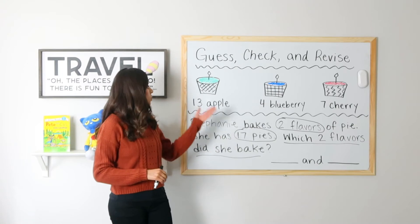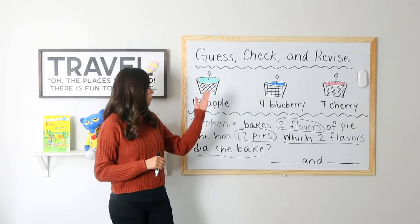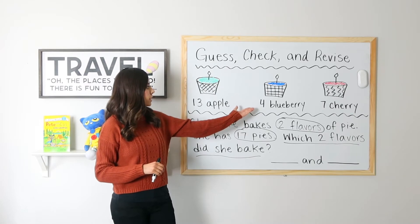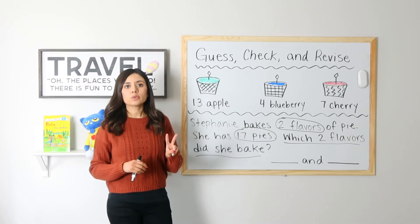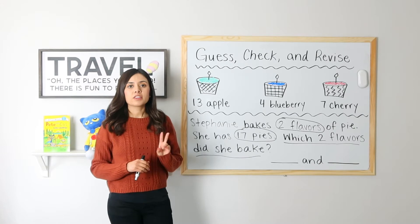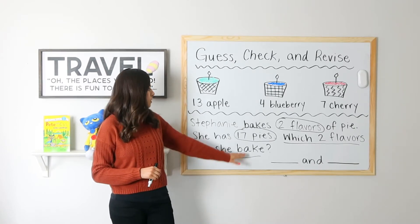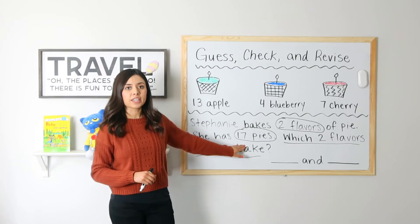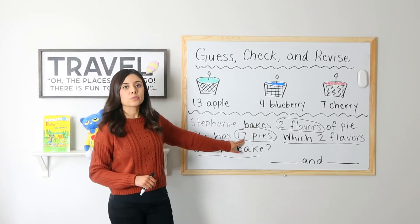What we want to do is look at our three flavors. We have 13 apple, 4 blueberry, and 7 cherry. We can only pick two of these. These two must equal a total of 17 when I add them together, because she baked two flavors and ended with a total of 17.